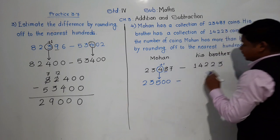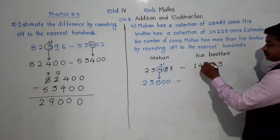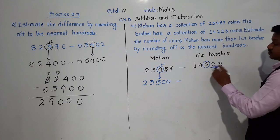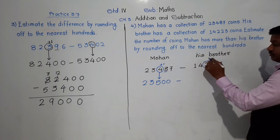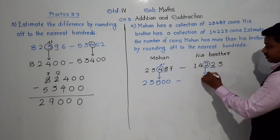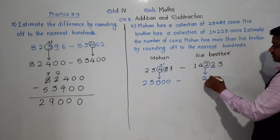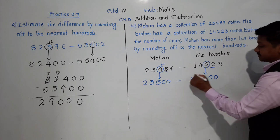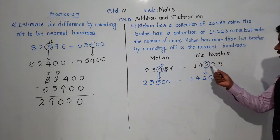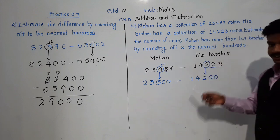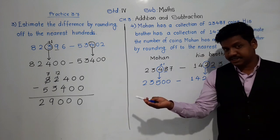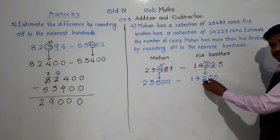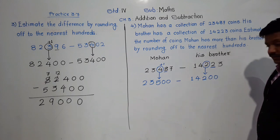For the second number, 14,223, the hundreds-place digit is 2. After 2, the next digit is also 2. Since 2 is less than 5, we do not add 1 — 2 remains as it is. For the next two digits put 00, and previous digits as they are. The three-digit portion 223 comes between 200 and 300, and 223 is close to 200, so we get 14,200.